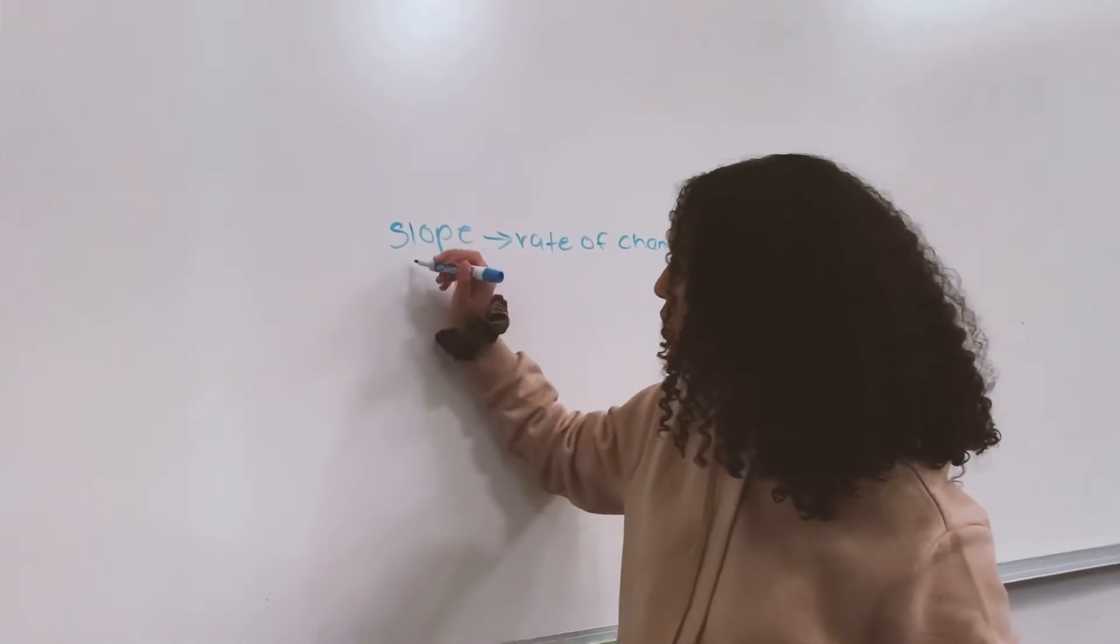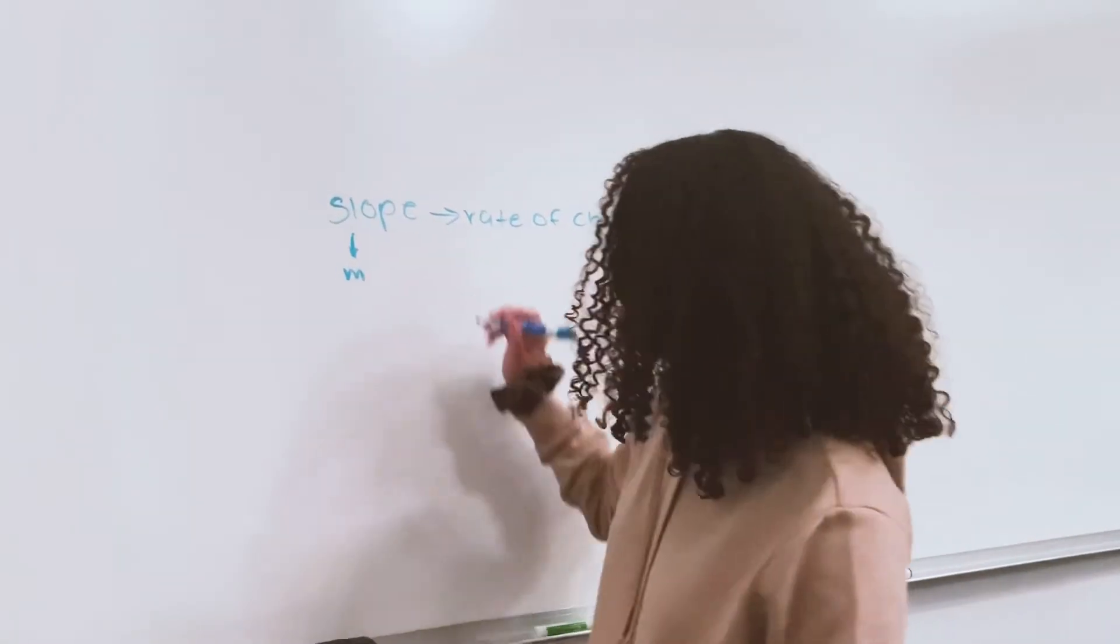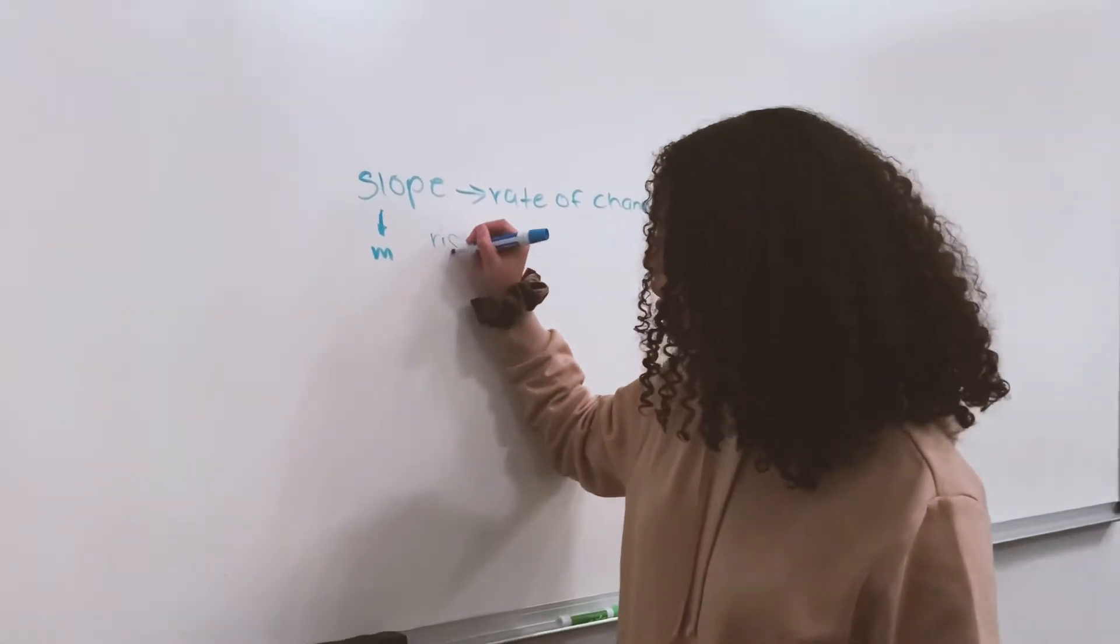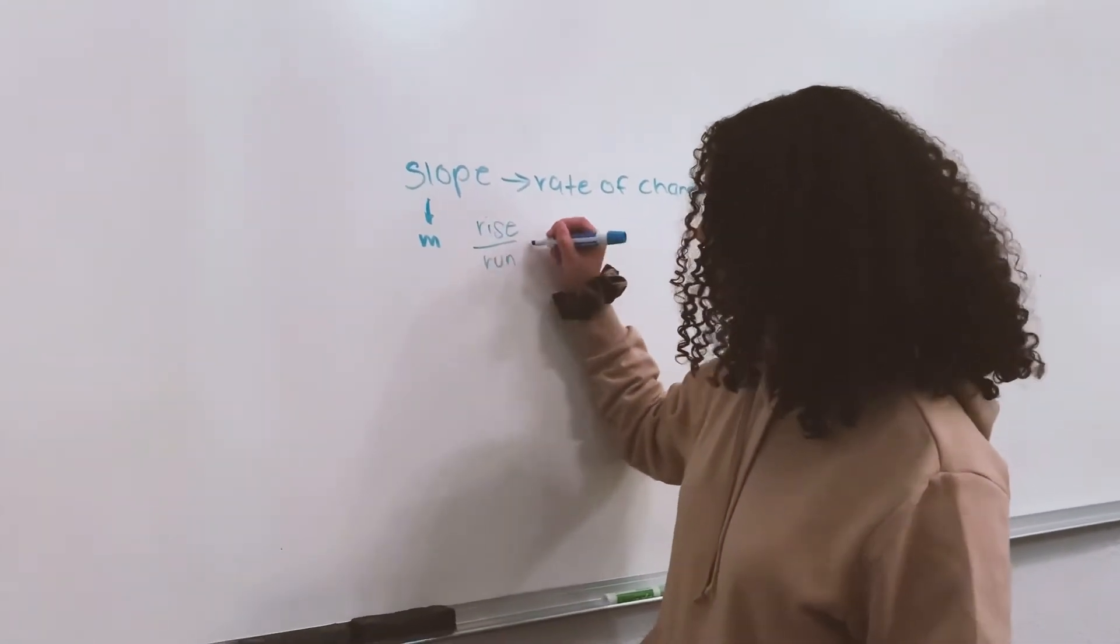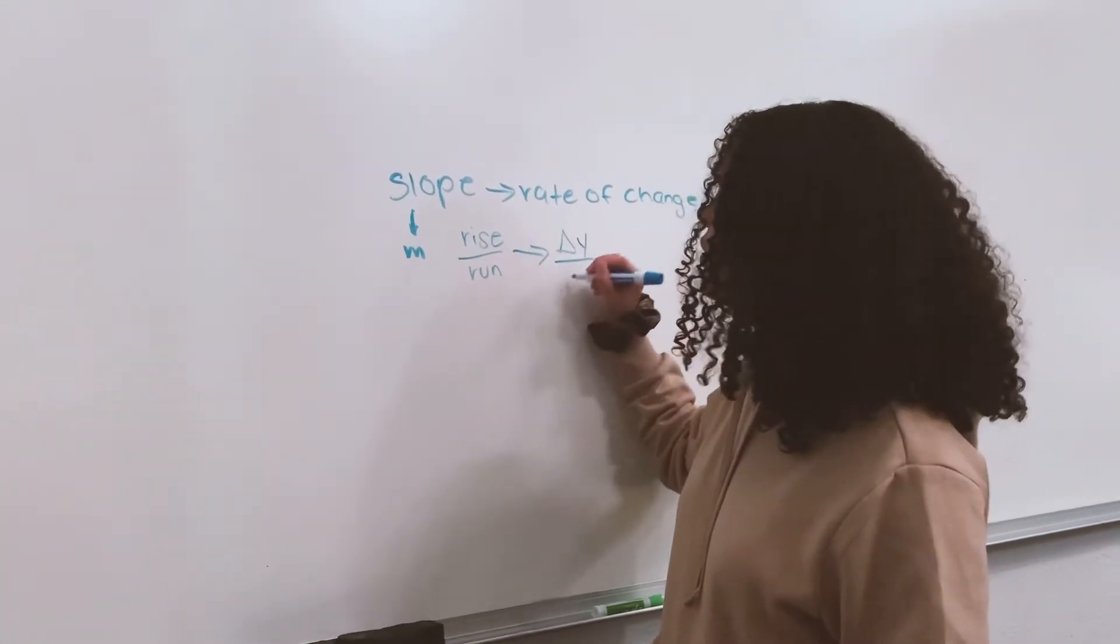Slope is also known as m in equations, which is rise over run, or delta y over delta x.